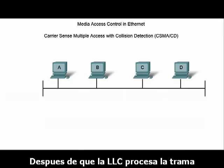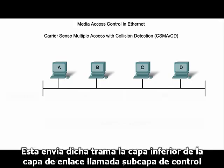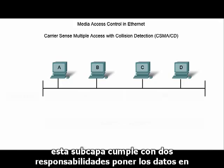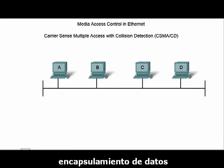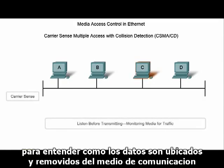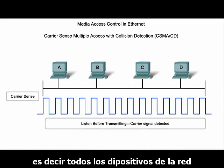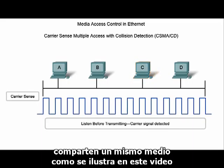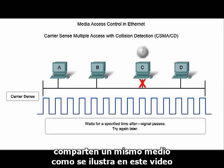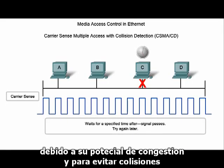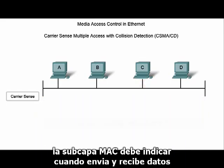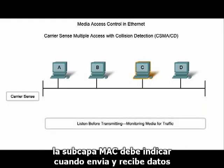After the LLC processes a frame, it sends that frame to the lower data link sub-layer called the media access control sub-layer. This sub-layer has two primary responsibilities: getting data on and off the media, and data encapsulation. To understand how data is placed on and removed from the media, we must first understand that Ethernet is a multi-access bus, meaning that all devices on a network share the same medium. Because of the potential for congestion and to avoid collisions, the MAC sub-layer must dictate when to send and receive data.